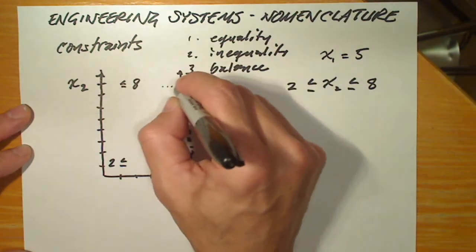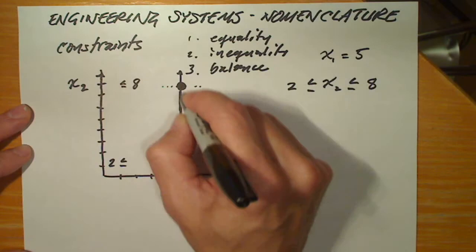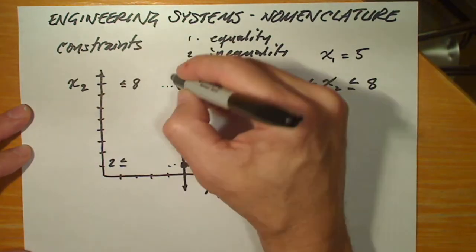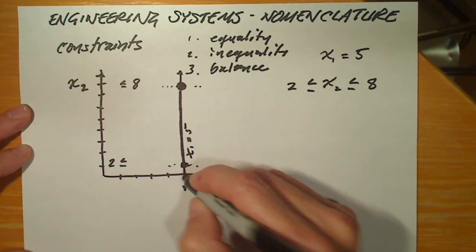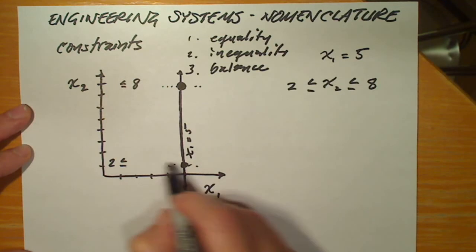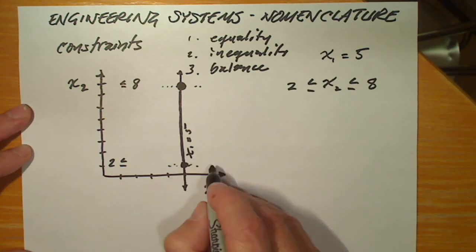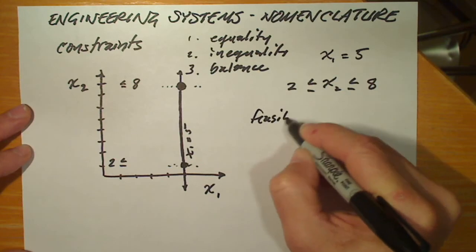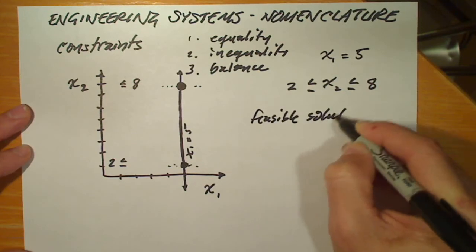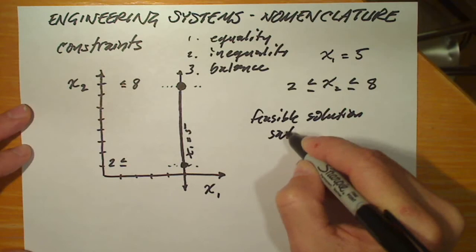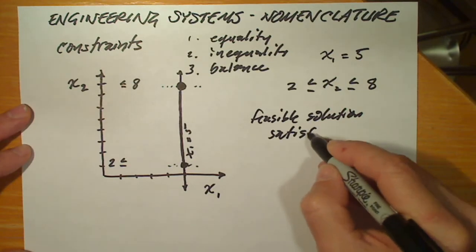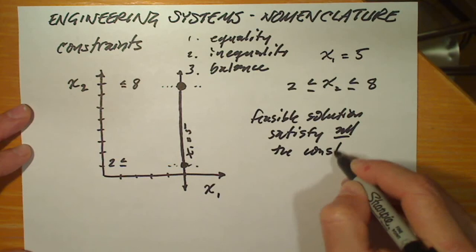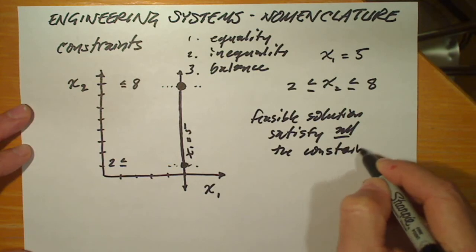Anything outside this line segment — that is, with x2 equal to 9, or x2 equal to 0, or x1 equal to 6, or x1 equal to 4 — is an infeasible solution. Feasible solutions satisfy all the constraint equations.